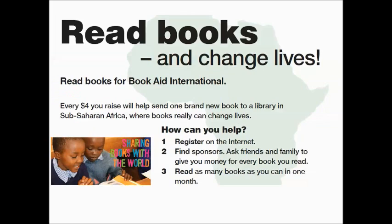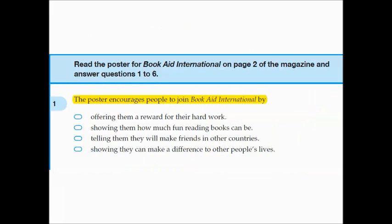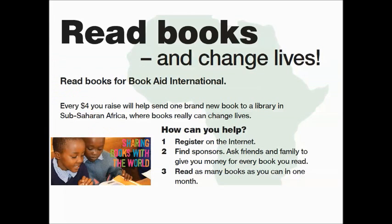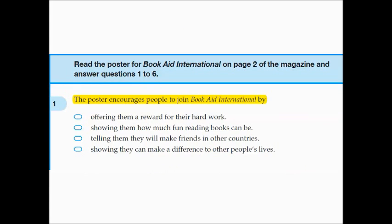Number two: how much fun reading books can be? There's no mention of fun. Number three: telling them they'll make friends in other countries. The article does mention asking family and friends to sponsor you — to give you money for every book you've read — but it doesn't say you're going to make friends by doing this. So that's a false clue. But going back to option four — showing they can make a difference to other people's lives — if you look for those exact words you simply won't find them. What you will find is 'where books really can change lives.' That phrase 'can change lives' gives you the same meaning as 'make a difference to people's lives.' So if you just look for actual words that match, you'll fall for the trick — oh, 'friends' is on the page and 'friends' is in the question. It's not just about matching words; it's about matching meaning.